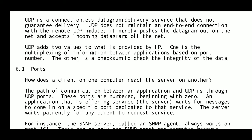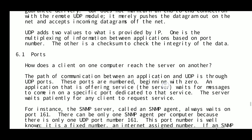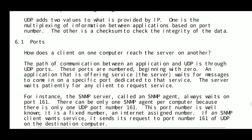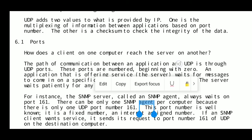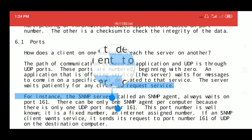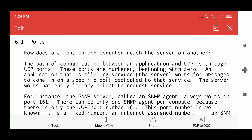UDP adds two values to what is provided by IP. One is the multiplexing of information between applications based on the port number. The other is a checksum to verify the integrity of the data. We will focus on these two services and how a client on one computer communicates with a server on another.